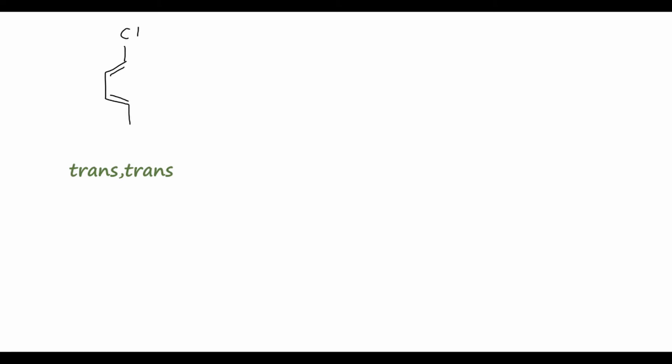Next, let's see how the stereochemistry of the diene affects the product. If we have a diene with two methyl groups arranged trans on both double bonds and react it with simple ethylene, the methyl groups will be arranged cis to each other on the final cyclohexene ring, because both double bonds in the diene had the same geometry — both trans. This would also apply if both were cis: same geometry on the diene means cis in the final product. Because there is a plane of symmetry, this is actually a meso compound, so we won't have any enantiomers.